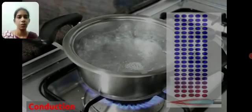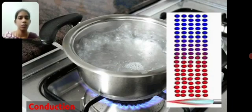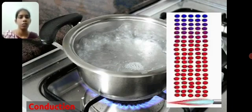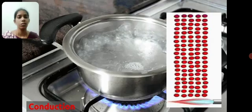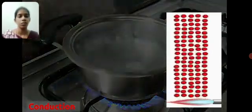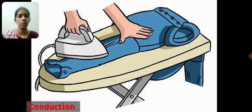For example, when we make tea, heat from the stove gets transferred to the steel pan because of direct contact, and thus this is conduction. When you iron your clothes, heat energy gets conducted from iron to clothes.